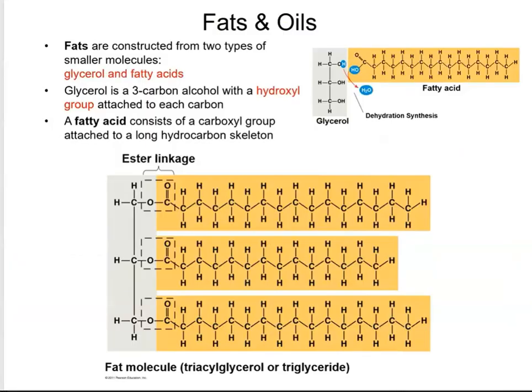What does a typical fat molecule look like? This would be a triacylglycerol or triglyceride. Even though lipids are not true polymers, we can break them down into smaller units. Those smaller units are glycerol and fatty acids. Glycerol is shaded in gray here, and you can see that there are three functional groups — an OH here, an OH here, and an OH here.